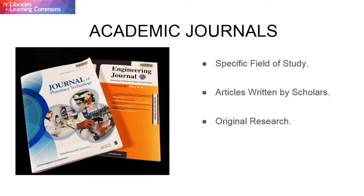Articles written in academic journals often undergo a peer review process. This means that they are reviewed by other scholars rather than by editors before they are published. This process helps to ensure that all of the research printed within a particular journal is accurate.